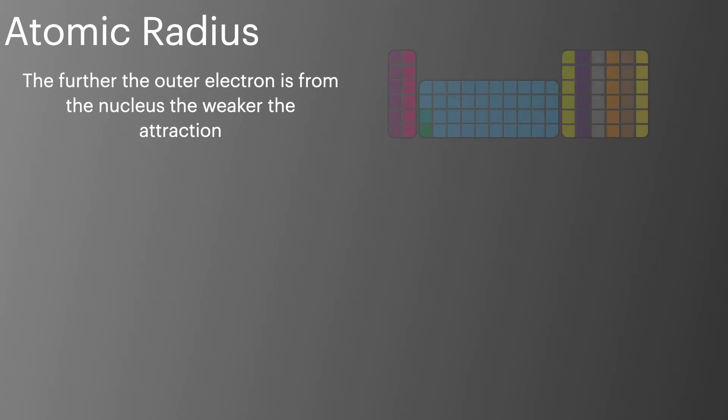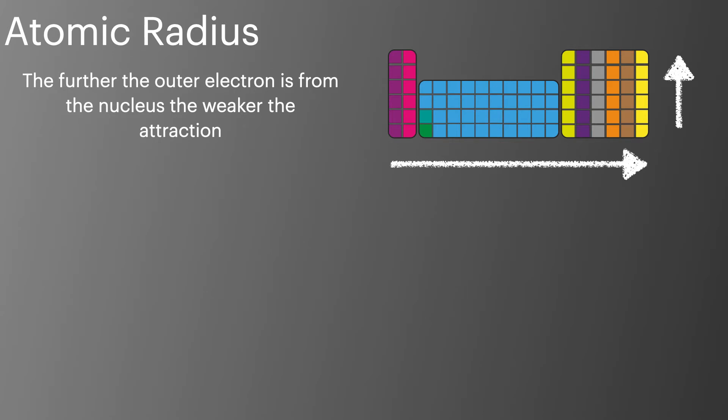The atomic radius or the size of the atom changes the ionisation energy. The bigger the atom the weaker the attraction between the highest energy electron and the nucleus. The atomic radius decreases as we go across the periodic table and as we go up the group.